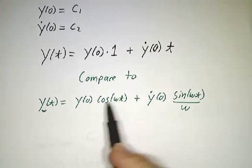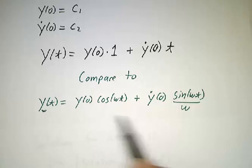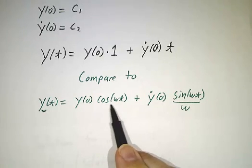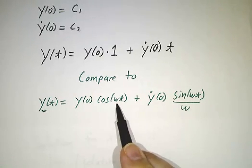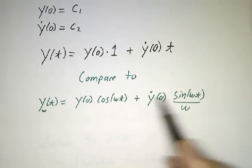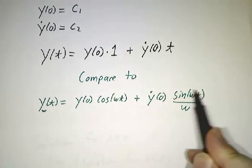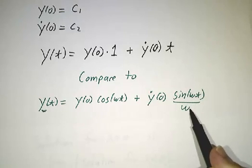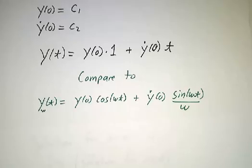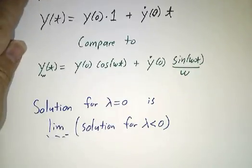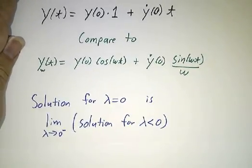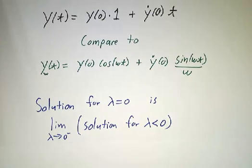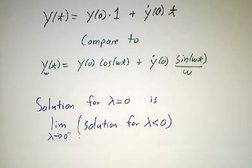As omega goes to zero, the cosine of omega t goes to one. The sine of omega t, well, when omega is small, sine of omega t is approximately omega t. Divided by omega, that gives you t. So in fact, the limit for lambda equals zero can be viewed as a limit of the solutions for lambda negative as lambda approaches zero.